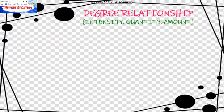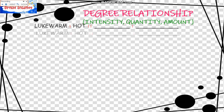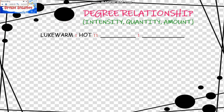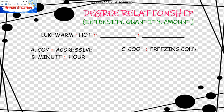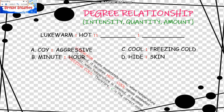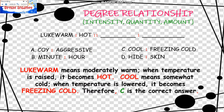The next relationship is the Degree Relationship, which may also refer to Intensity, Quantity, or Amount. The example is: Lukewarm is to Hot as blank is to blank. The choices are: A, Koi is to Aggressive; B, Minute is to Hour; C, Cool is to Freezing Cold; D, Hide is to Skin. Lukewarm means moderately warm — when temperature is raised, it becomes hot. Cool means somewhat cold — when temperature is lowered, it becomes freezing cold. Therefore, C is the correct answer.